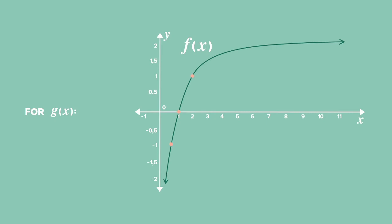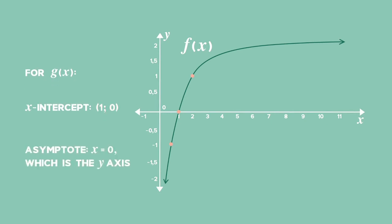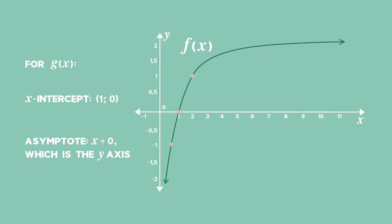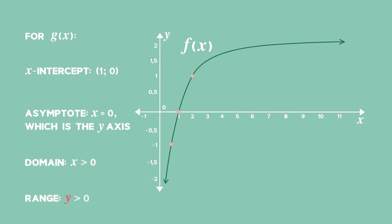The graph g has the same x-intercept as f of x with coordinates (1, 0). Its asymptote is also the line x equals 0, or the y-axis. Its domain is the set of x values greater than 0, and the range is all y values greater than 0. The graph is also the inverse of a decreasing exponential graph and is a decreasing log graph.